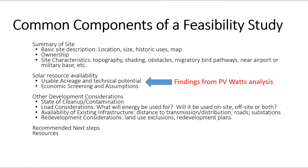The main objective of putting together a feasibility study is to communicate as much information as possible about the site to parties that are interested in potentially developing the property. You want to include things like a summary of the site — a basic description talking about what it was used for in the past, where it's located, and how large the parcel is. It's also important to include things like ownership: who holds a stake in the property and whether the municipality has any influence over the property.